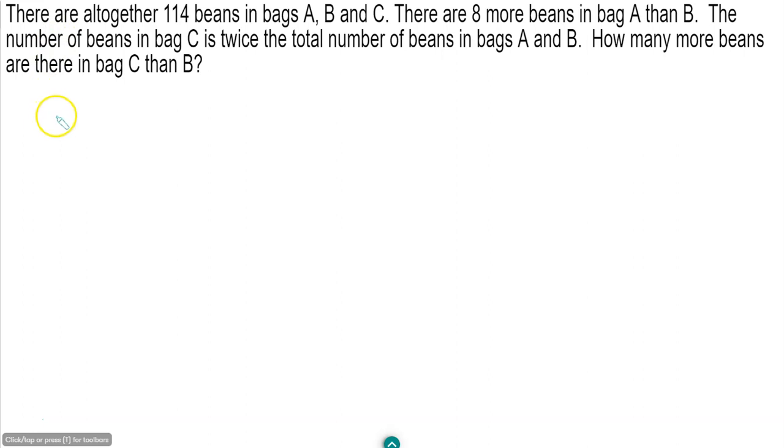Now there is a lot of information in this question so let's start writing it down. So we know that the total is 114. We know we have a bag A, we have a bag B and we have a bag C.